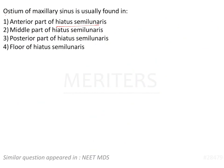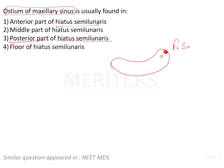Going back to the question: the ostium of the maxillary sinus — that is, the opening of the maxillary sinus — is usually found in the posterior part of the hiatus semilunaris. To recap: the anterior-most part houses the frontal sinus, then the anterior part has the anterior ethmoid sinus, and the posterior part has the maxillary sinus ostium. So option three — posterior part of the hiatus semilunaris — is the correct answer.